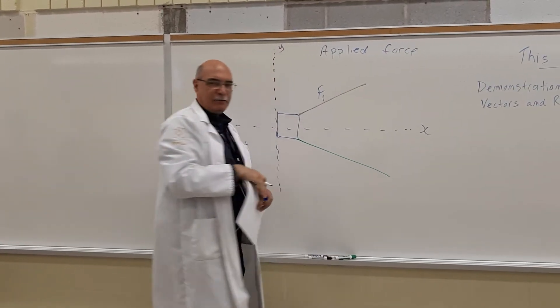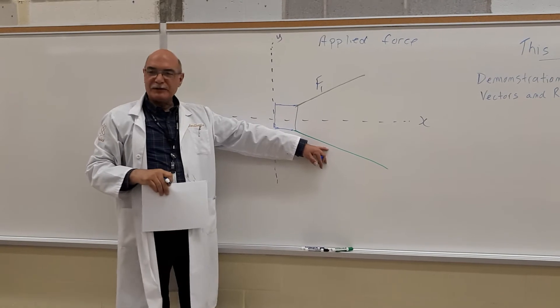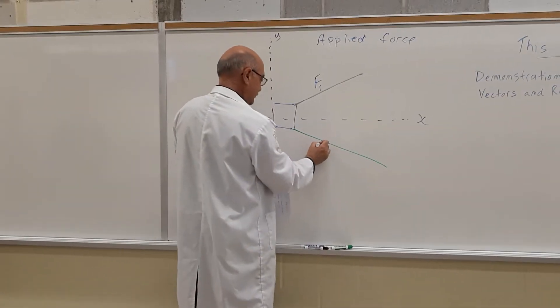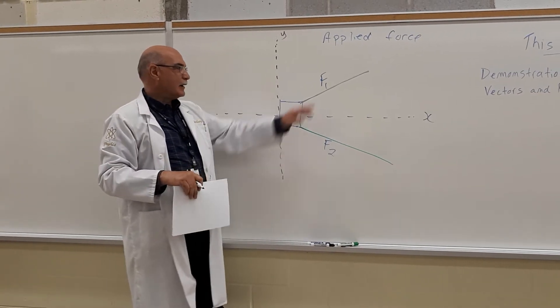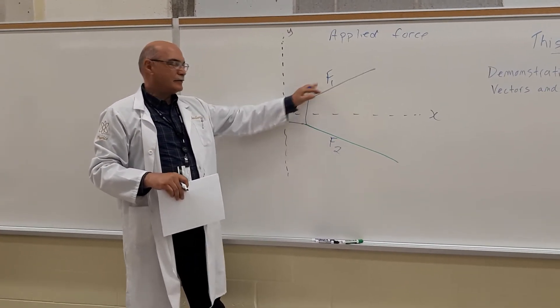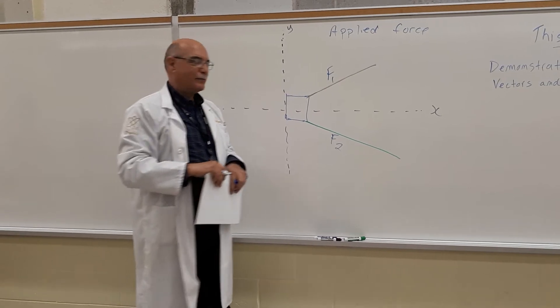We call that F1. And there's also an applied force on the other rope. We'll call this one F2, representing forces. I don't have, as I said, the instrumentation to put a number on here, so I'll let these two letters depict the forces.